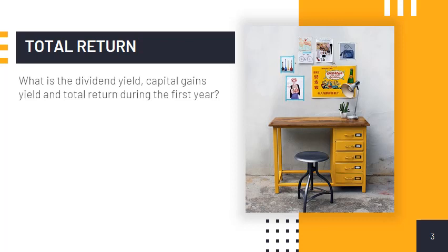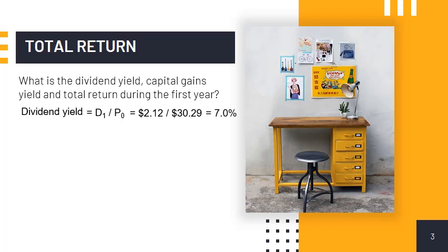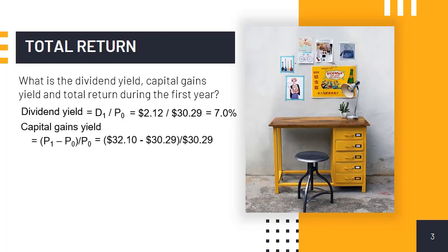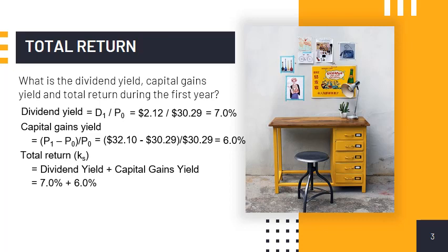The required rate of return of 13 percent can be broken down into dividend yield and capital gains yield. Dividend yield for the first year is computed as D-sub-1 ($2.12) over P-sub-0 ($30.29), which equals 7 percent. Capital gains yield is computed as the difference between P-sub-1 ($32.10) and P-sub-0 ($30.29), all over P-sub-0, which equals 6 percent. The total return is dividend yield 7 percent plus capital gains yield 6 percent, equaling 13 percent. Since capital gains yield equals the constant growth rate, dividend yield can simply be solved as total return 13 percent minus capital gains yield 6 percent equals 7 percent.